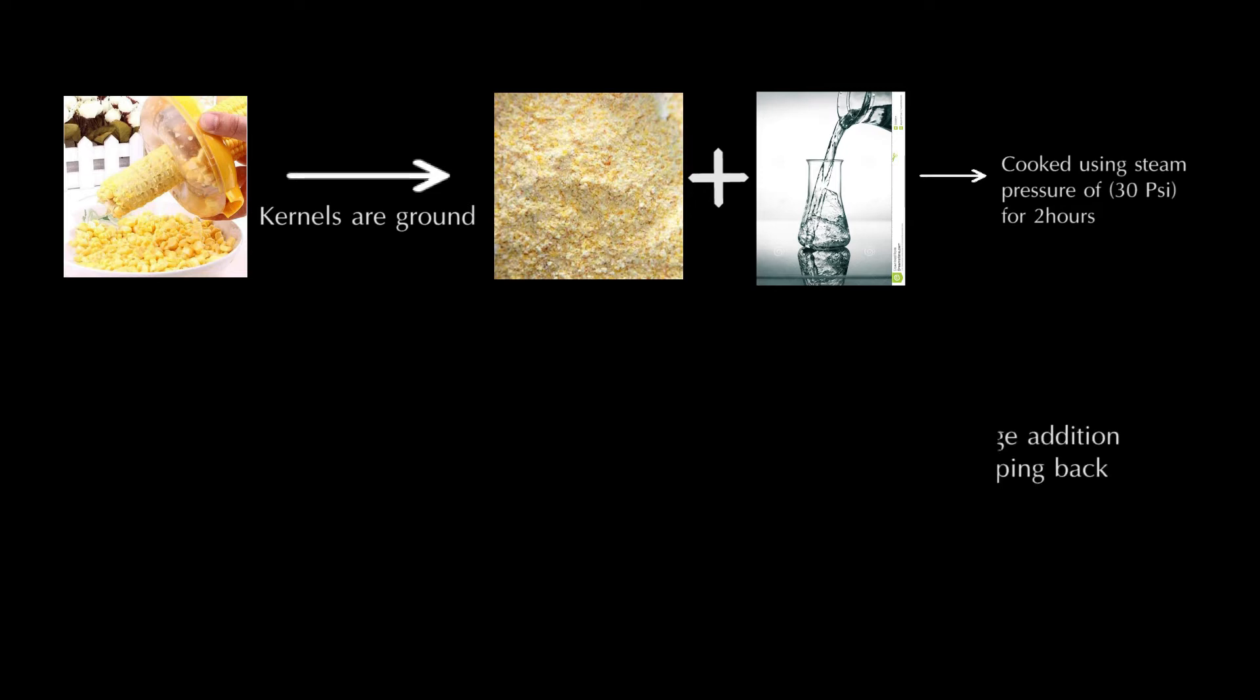Later, stillage is added. Stillage is the remaining residual matter from previous batch after product recovery. This process is called sloping back. However, this step is undesirable because of presence of toxic metabolites in the stillage. Therefore, later this step is omitted from the process.